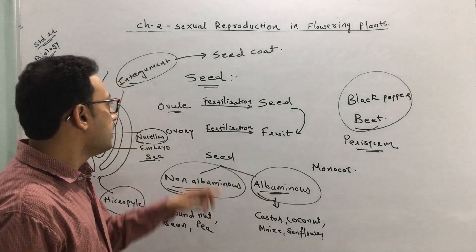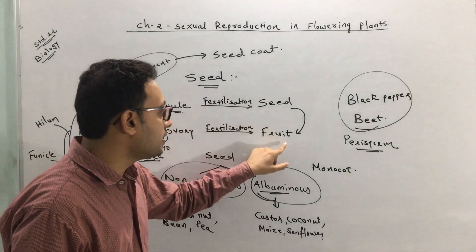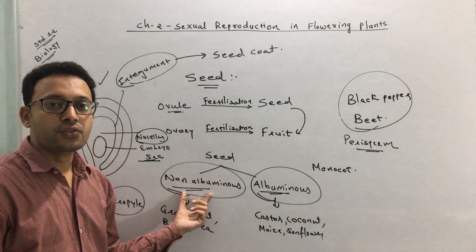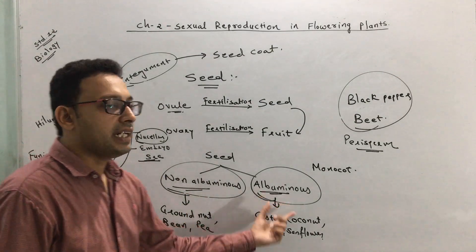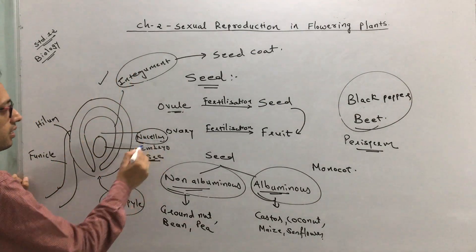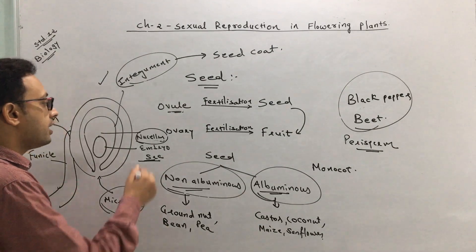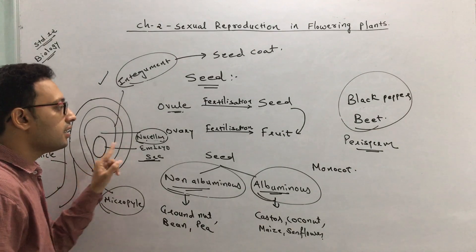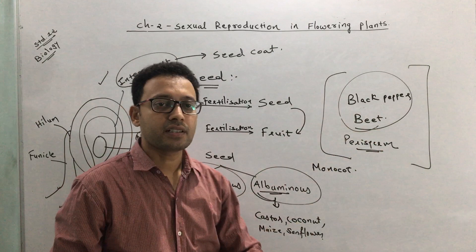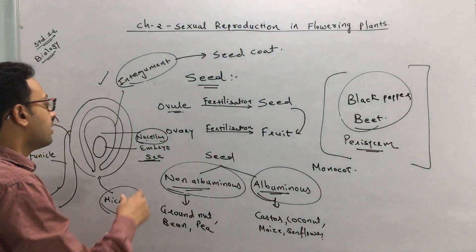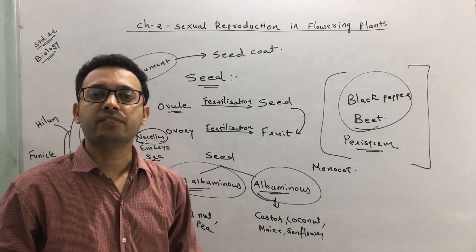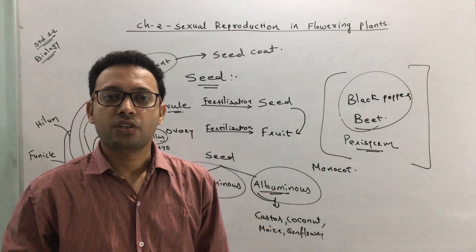To summarize: the ovule fertilized converts to a seed; the ovary converts to a fruit. There are two types of seeds — non-albuminous, where all food is utilized (e.g., groundnut), and albuminous, where some food remains (e.g., castor, coconut, maize, sunflower). The embryo sac leads to formation of endosperm and embryo. Remnants of nucellus food are called perisperm, found in black pepper and beet. The integument converts to seed coat, and the micropyle remains for entry of water and oxygen to aid germination.